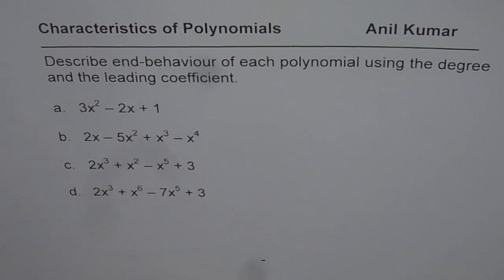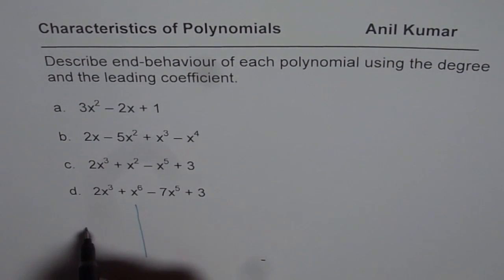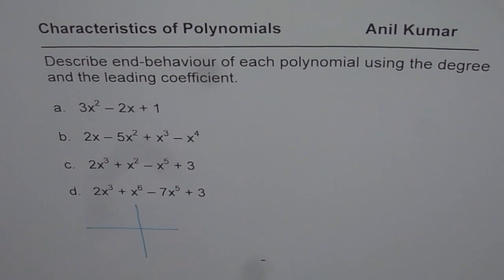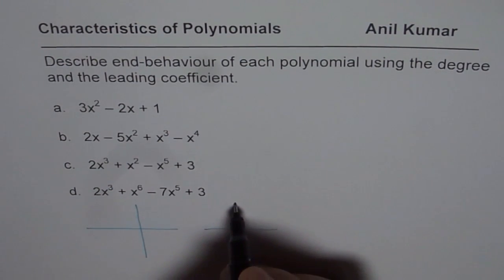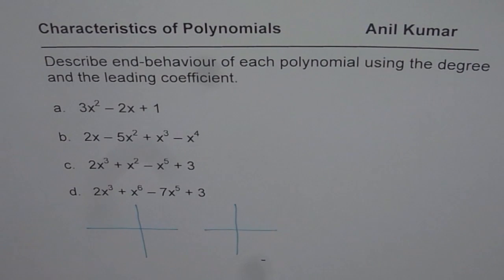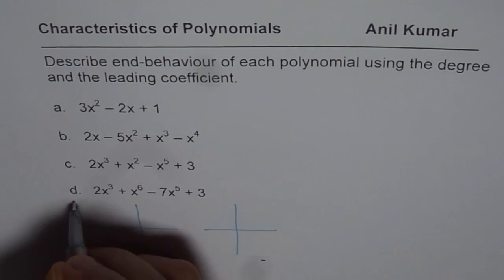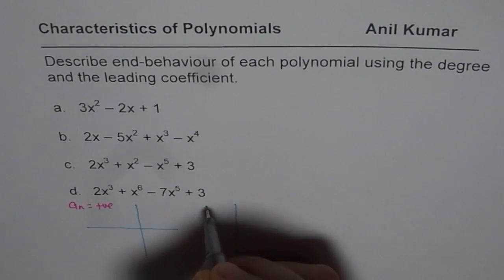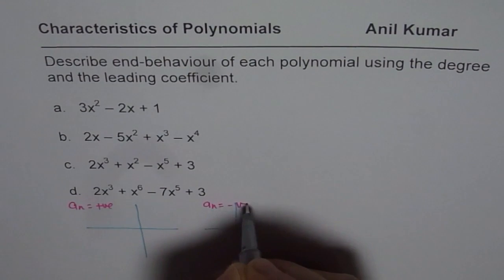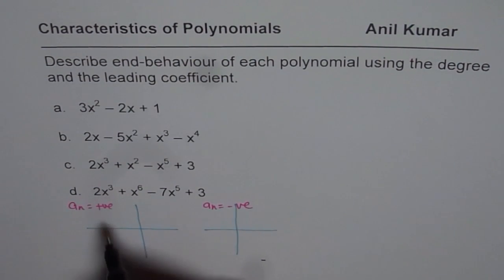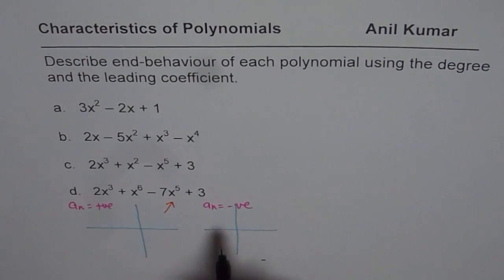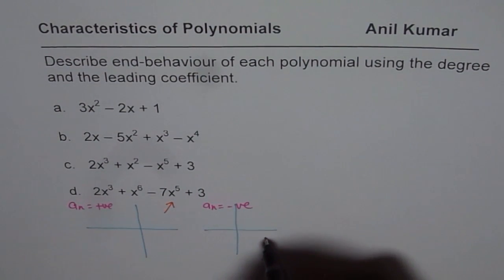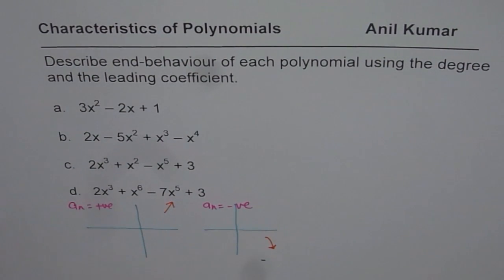Here is my suggestion. When linking end behavior with leading coefficient, we have to take care of two things. The leading coefficient An could be positive or negative. If the leading coefficient is positive, then the right side is up. If the leading coefficient is negative, then the right side is down. That is common for both even or odd degree polynomials.